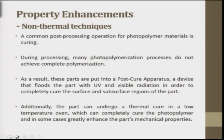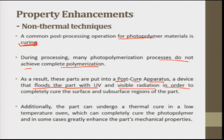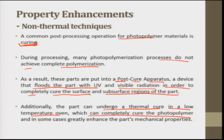A common post-processing operation for photopolymer materials is curing. During processing, many photopolymerization processes do not achieve complete polymerization; as a result, parts are placed into a post-cure apparatus that floods the part with ultraviolet and visible radiation to completely cure the surface and subsurface regions. Additionally, the part can undergo a thermal cure in a low-temperature oven, which can completely cure the photopolymer and in some cases greatly enhance the part's mechanical properties.